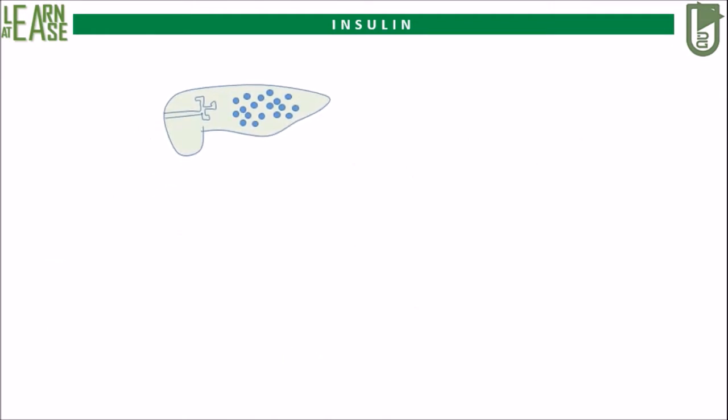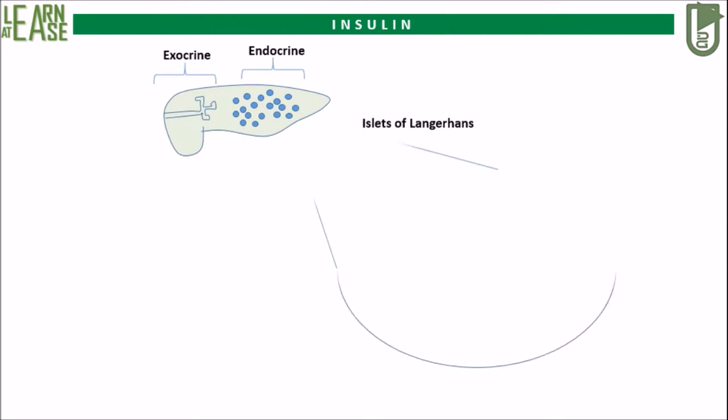The major portion of pancreas deals with producing digestive juices and contains ducts — this region is known as the exocrine portion. The narrow tail portion of the pancreas carries endocrine clusters of cells, known as islets of Langerhans. This tail portion of the pancreas is endocrine in nature.